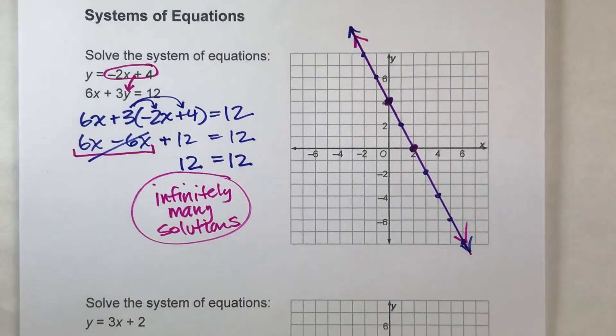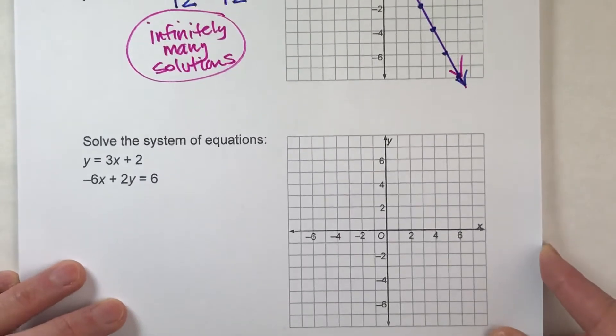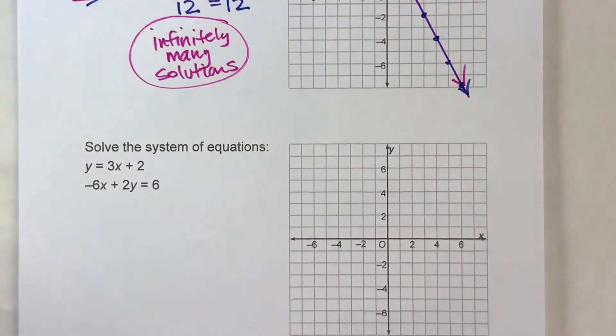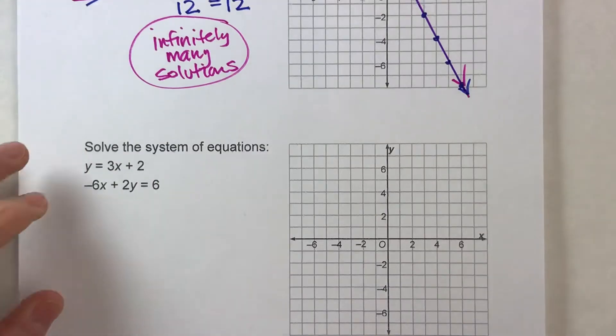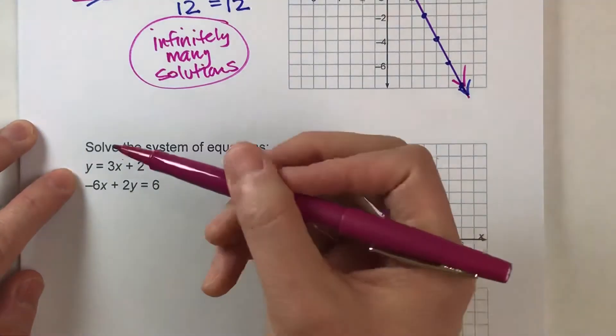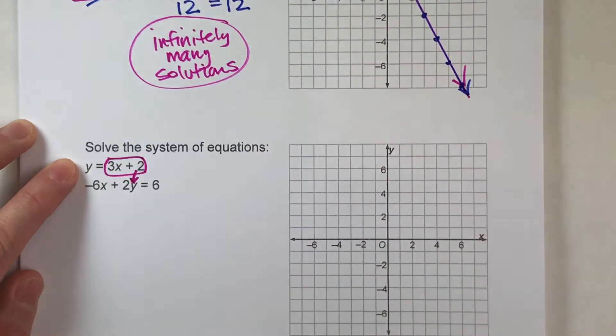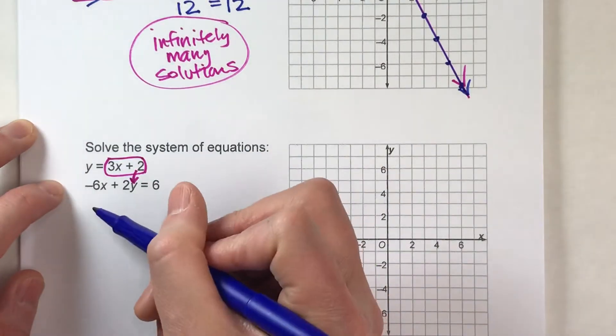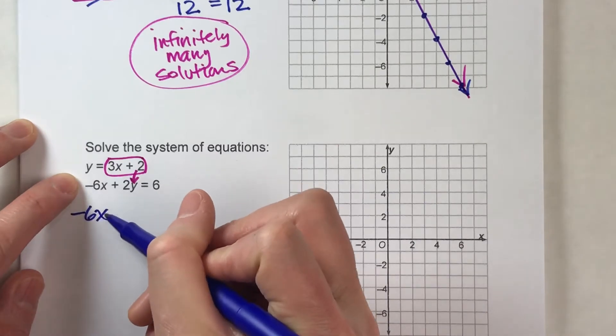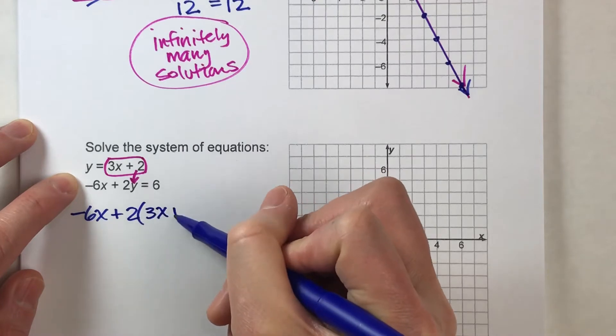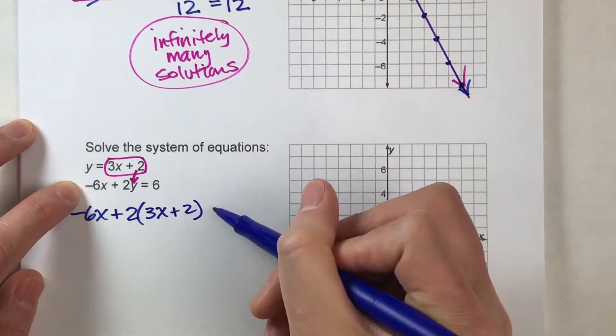So let's look at a second example here. We've got y = 3x + 2 and -6x + 2y = 6. Let's do it algebraically first. Since y equals all of this, I'm going to start by substituting all of that in for y. So I've got -6x plus 2 times, instead of 2 times y, 2 times all of the stuff that y equals, and that equals 6.